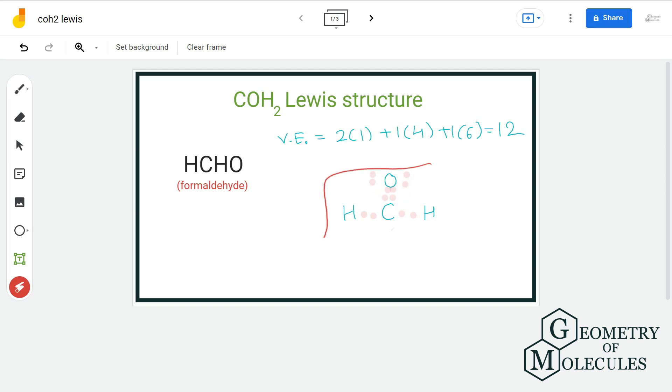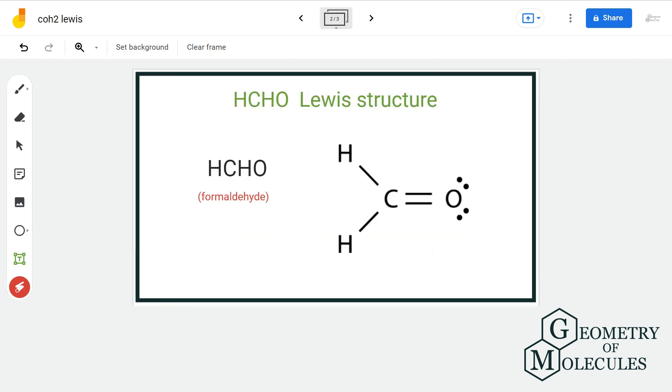This is the final Lewis structure of formaldehyde, in which every atom has a complete outer shell and zero formal charge.